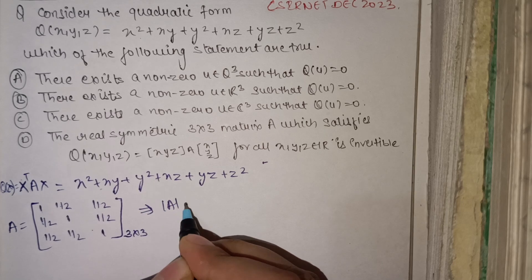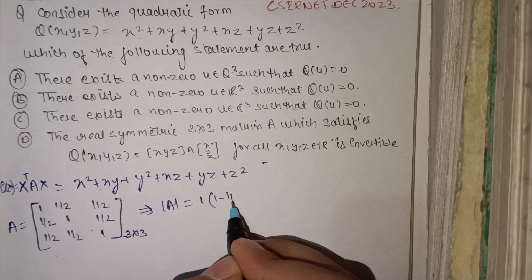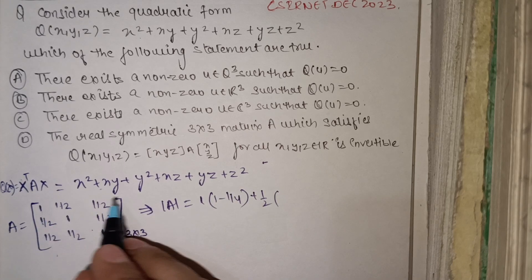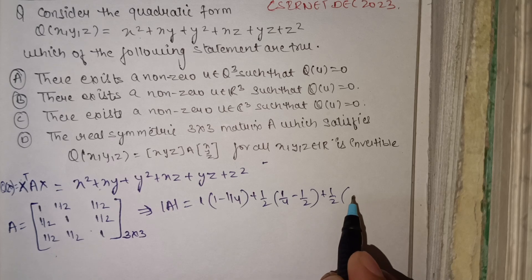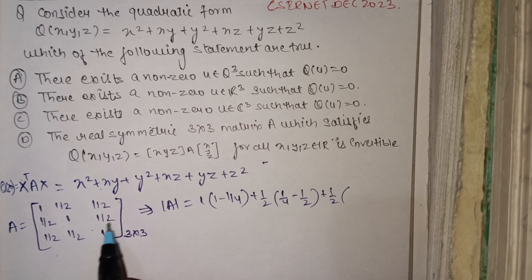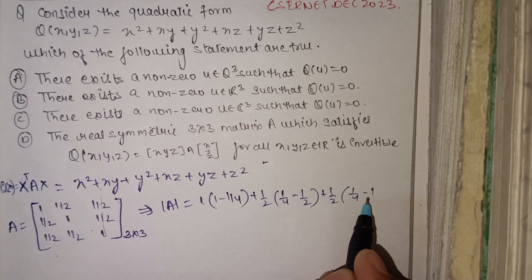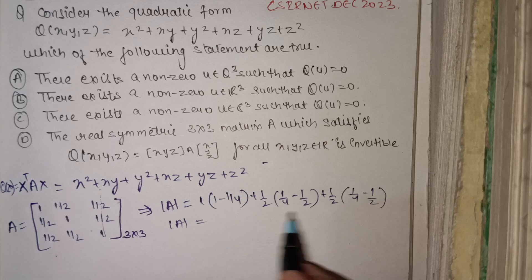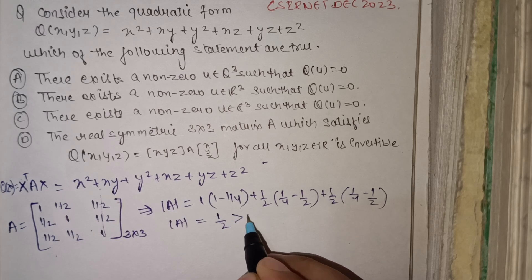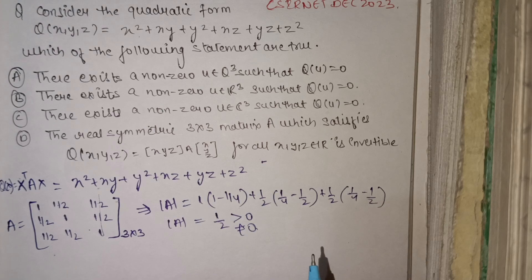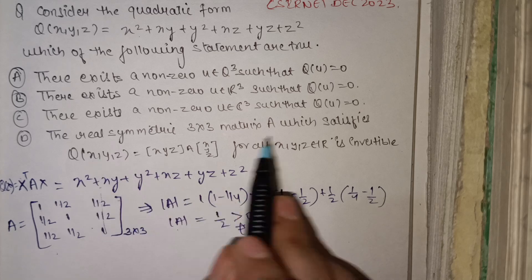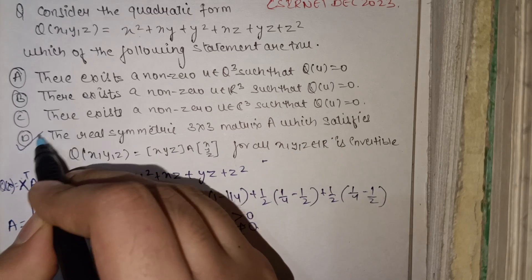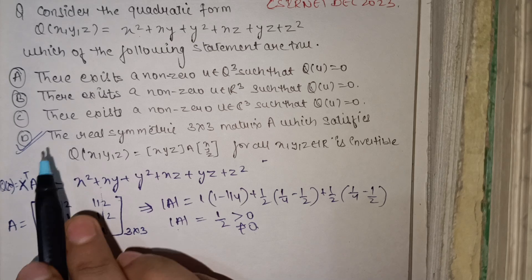Computing the determinant of A: we get 1·(1 − 1/4) + (1/2)·(1/4 − 1/2) + (1/2)·(1/4 − 1/2), which simplifies to 1/2. Since the determinant equals 1/2, which is greater than 0 and not equal to zero, the matrix is invertible. So option D is true.